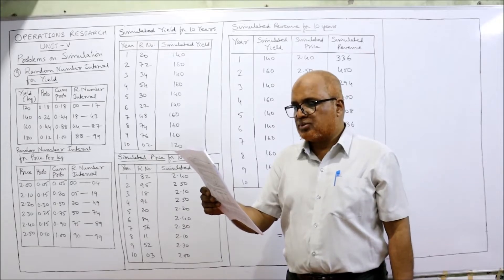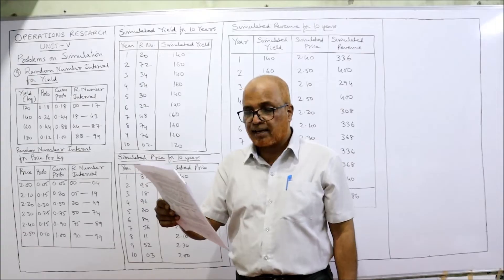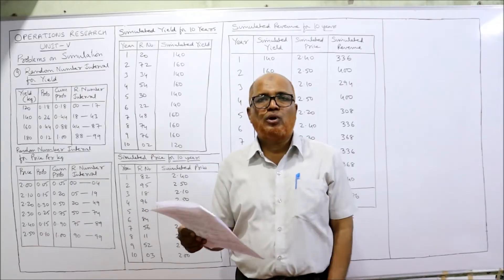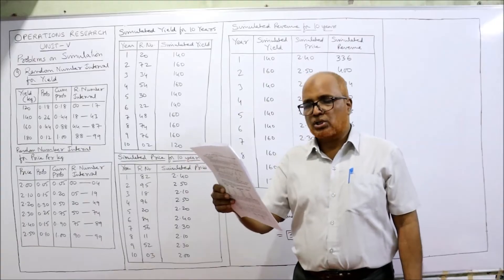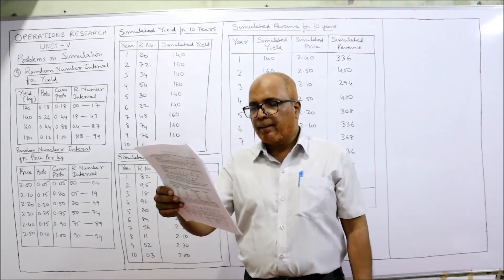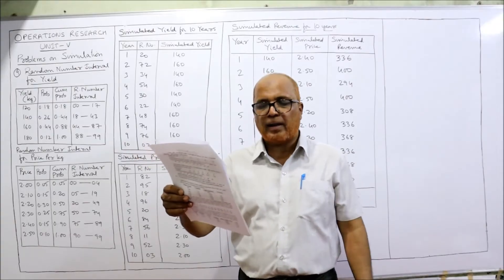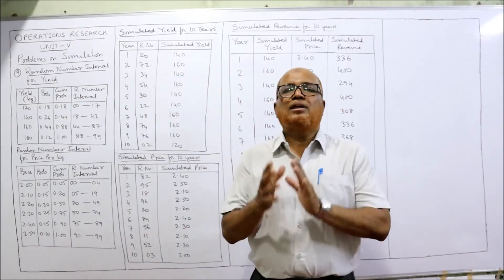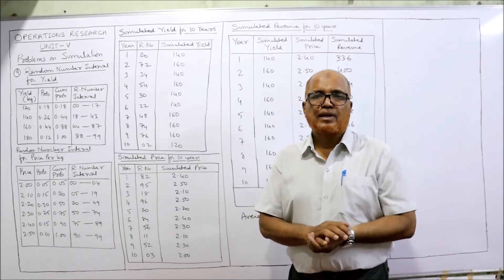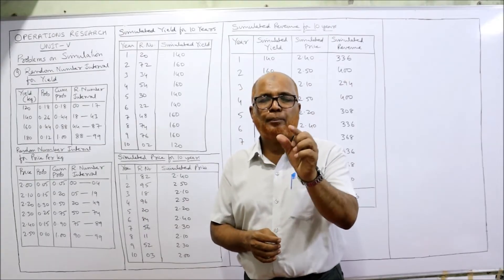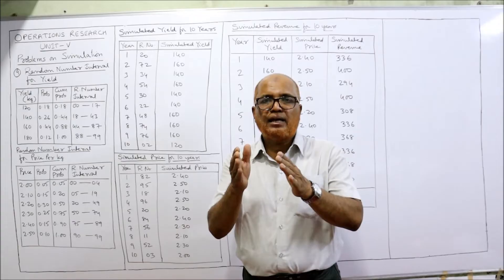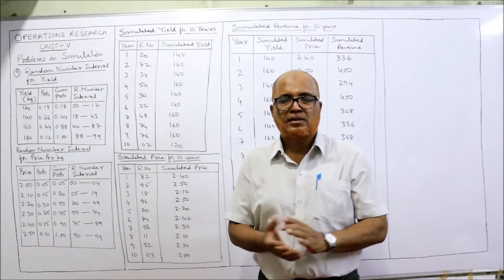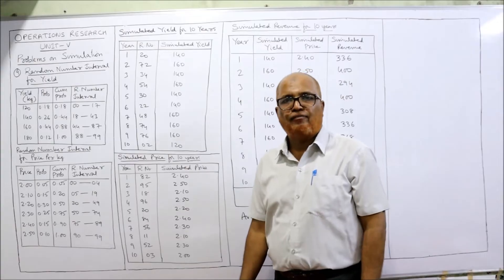Simulate the price she might expect over the next 10 years using the given random numbers — that is the second question. The first question is to simulate the yield for 10 years, the second is to simulate the prices for 10 years, and the third question — assuming prices are independent of yield — is to combine these into revenue per acre and find the average revenue per acre she might expect every year. For the third question, multiply yield by price to get revenue, then calculate the average.